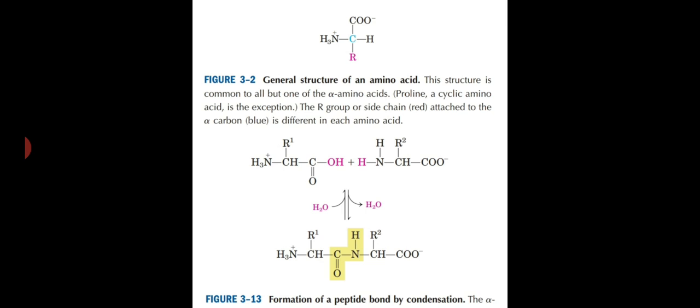Amino acids differ from each other in their side chains or R groups, which vary in structure, size, and electric charge and influence the solubility of the amino acids in water. In the simplest case, the R group is a hydrogen atom and the amino acid is glycine.